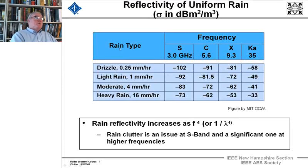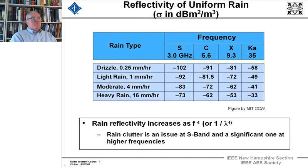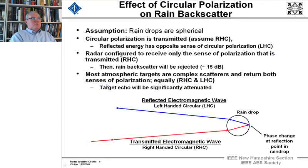Moderate rain at S-band is four orders of magnitude greater per unit volume than at K-band at 35 gigahertz. Rain clutter at S-band is significant when you account for typical radar volumes at higher frequencies. At UHF or VHF, the backscatter is so low that rain is really not a problem for those radars.